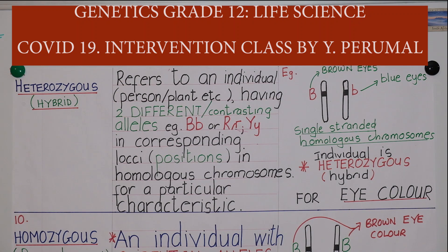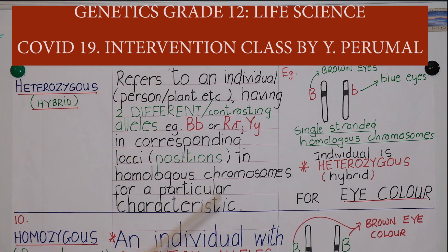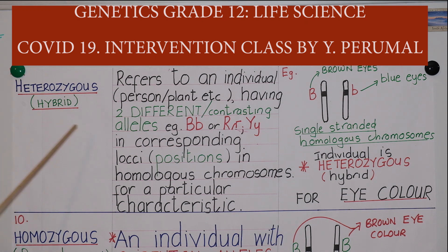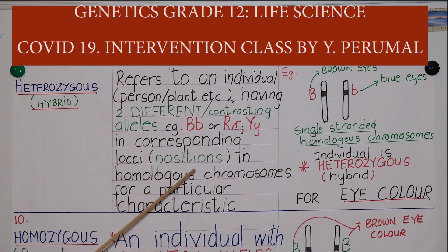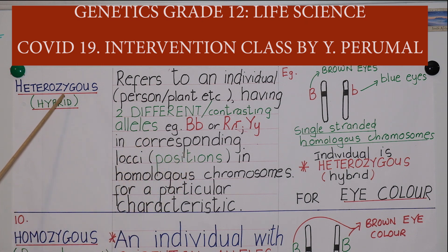Hello boys and girls, I am Mrs. Y. Paramel. Today I'm going to deliver my second lesson on genetics, which is a grade 12 life science topic. Today I'm going to discuss 11 different concepts and I'm going to do my best to explain each of those concepts to you. The first one is heterozygous or hybrid.